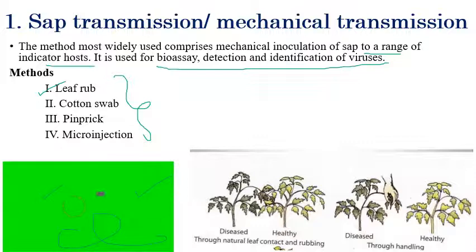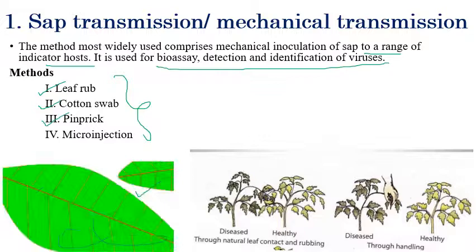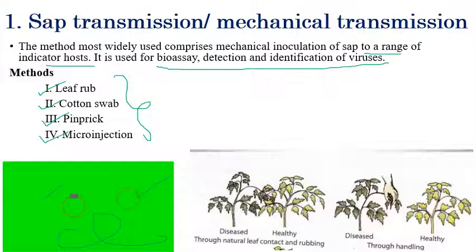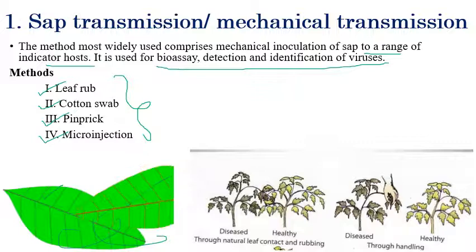The second method of sap transmission is cotton swab. The sap from the infected plant is collected, a cotton swab is dipped into that sap, and then it is rubbed onto the uninfected plants so the virus gets transmitted. Another method is the pinprick method, where infected plant parts are used to inoculate the plant.